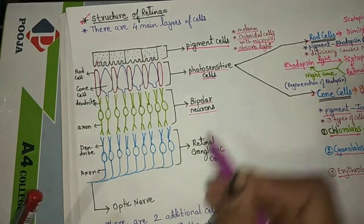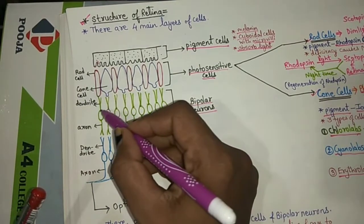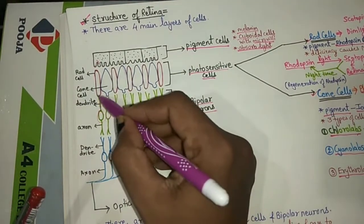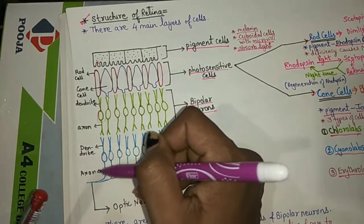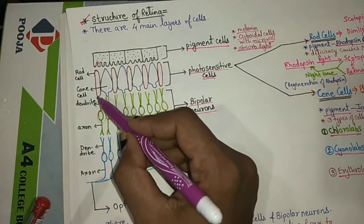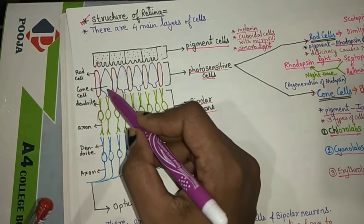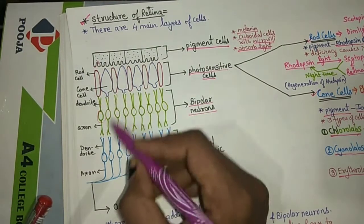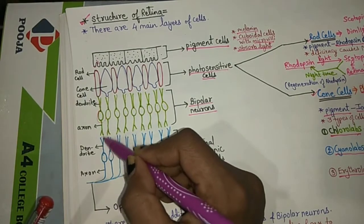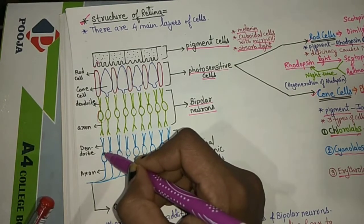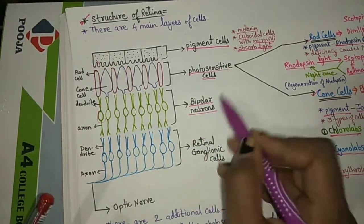The third layer of the retina is the layer of bipolar neurons. These bipolar neurons have a cell body, dendrites, and an axon. The dendrite parts form a synapse with the rod and cone cells above them, and also with the layer below them.